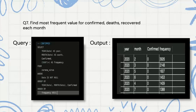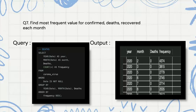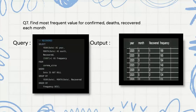Then we are finding the most frequent value for confirmed, deaths, and recovered each month. For the confirmed query, we are counting everything as frequency, grouping by year and month, and ordering by frequency in descending order so we get the highest to lowest. The deaths query and recovered query are similar to this.